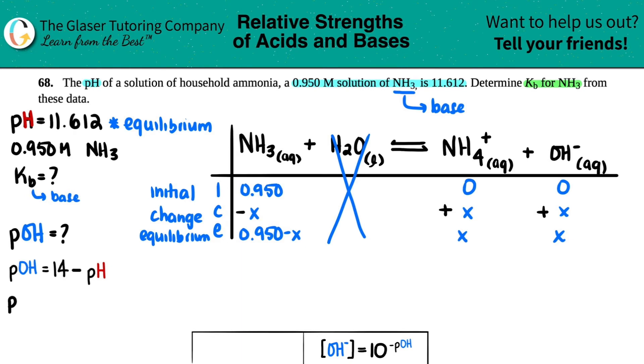So let's do that. POH equals 14 minus the pH, which was 11.612. So POH equals 14 minus 11.612. We get 2.388.